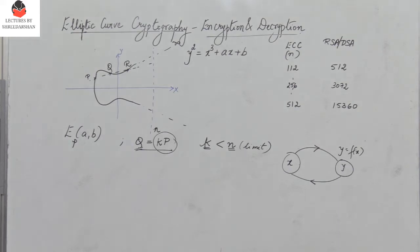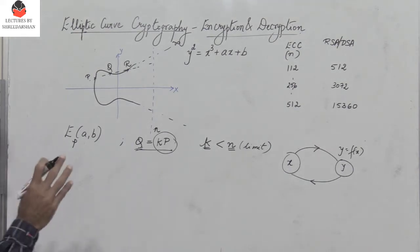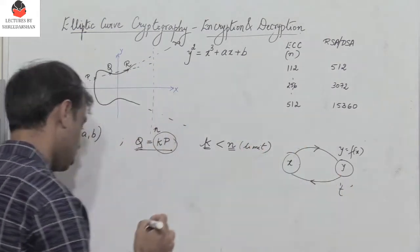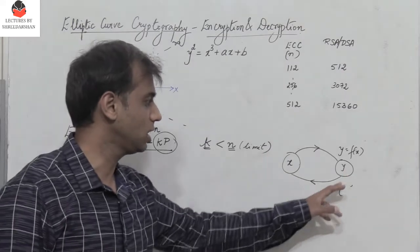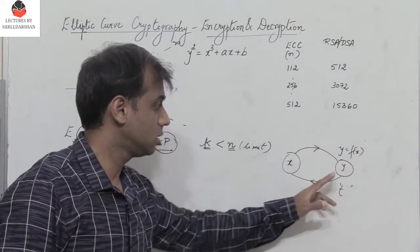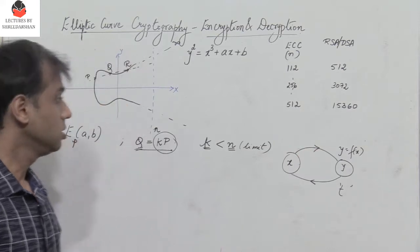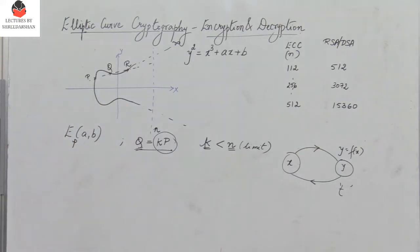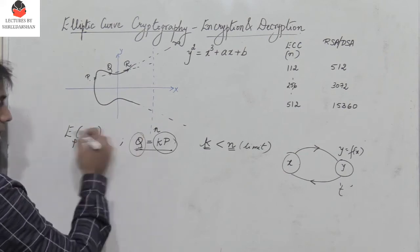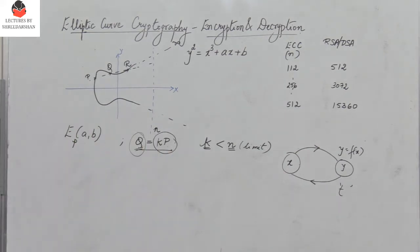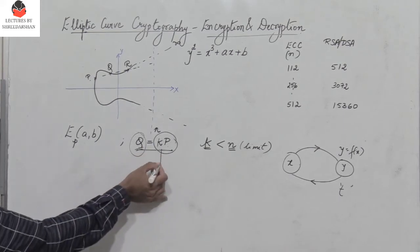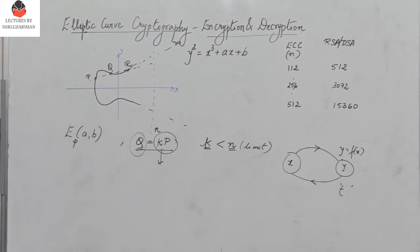It becomes easier if there is a given trapdoor value t; if that value is known then we can find x, otherwise the reverse process is a very hard problem. Similarly, the value of Q can easily be calculated if k and P are known, but if they are not known then it is very difficult to find k from Q and P — this is the discrete logarithm problem for elliptic curves.